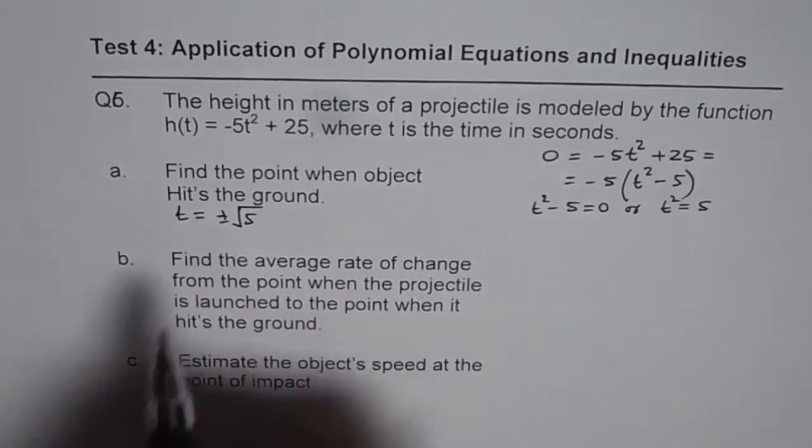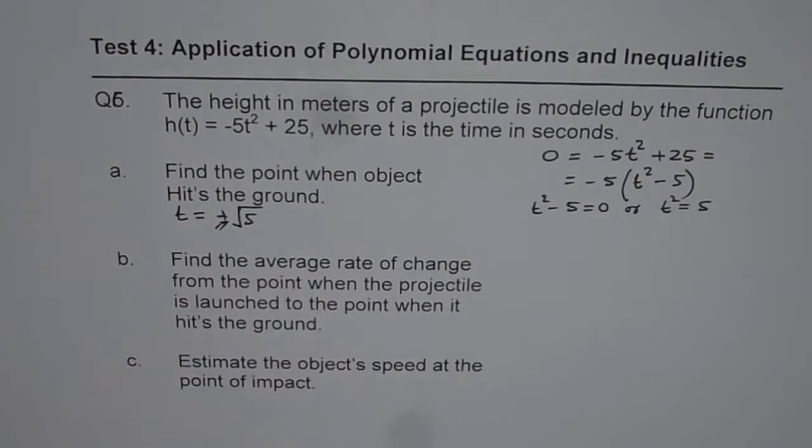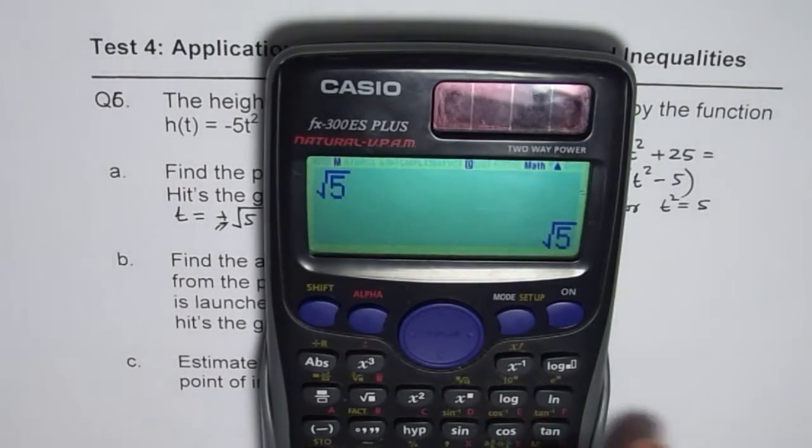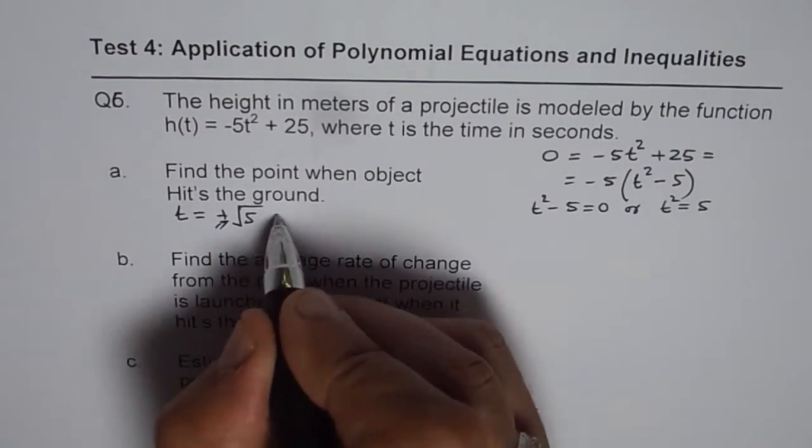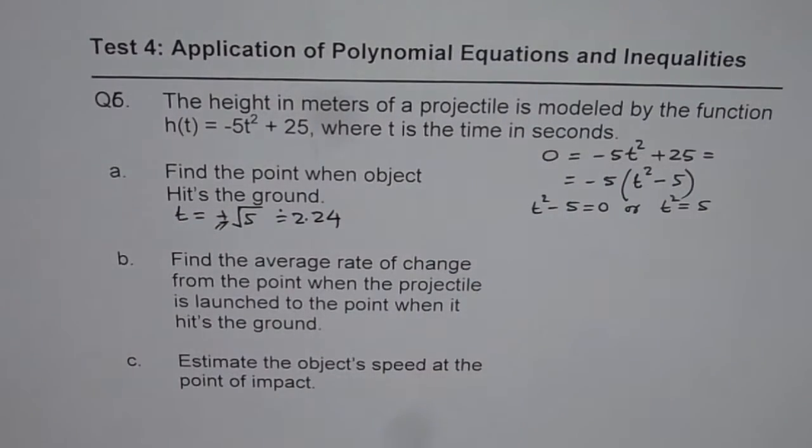And of course t cannot be negative, so we will take positive square root of 5 as our answer. So we will use the calculator, square root of 5 equals 2.236. So let us write this as approximately 2.24. So that is the time when it hits the ground.